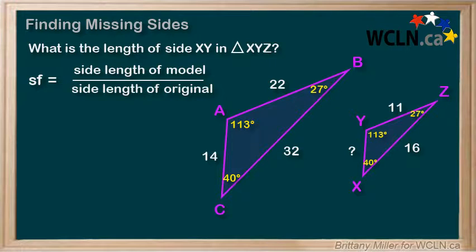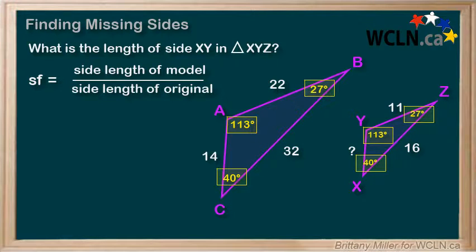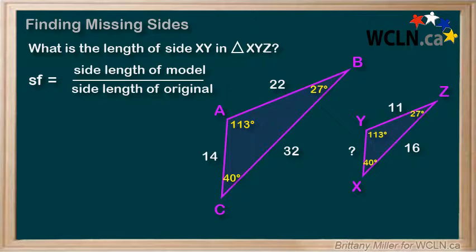Find the length of side XY in triangle XYZ. Triangle ABC and triangle XYZ have the same angles, so we know that they are similar. Let's find the scale factor first, assuming triangle ABC is the original. We can pick either triangle to be the original, as long as we remember our choice. Look at the position of the angles to find the corresponding sides.